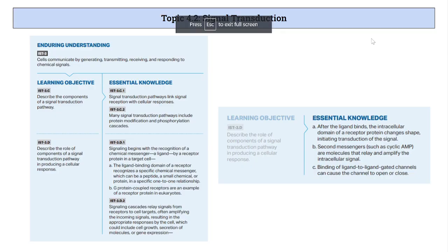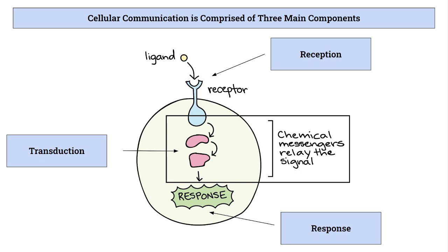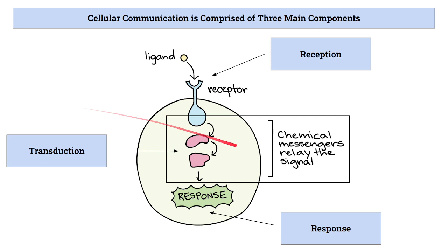Hello everybody. Today we're going to get into topic 4.2, which is going to be on signal transduction — what happens after a ligand binds to the receptor, but before the response is actually given. When we talk about cellular communication after the ligand reaches the receptor, we have three main components: reception, transduction — where chemical messengers relay the signal from the receptor — and then the response. Today is mostly going to be on transduction.